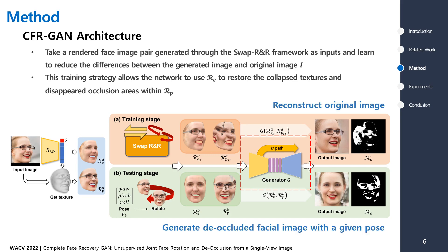We take both rendered image RES and RPSR generated through the SwapRNR framework as inputs and then aim to reduce the difference between the generated and original images. Simultaneously, our CFR-GAN is trained to recognize the location of occlusions caused by inter-occlusion and self-occlusion.